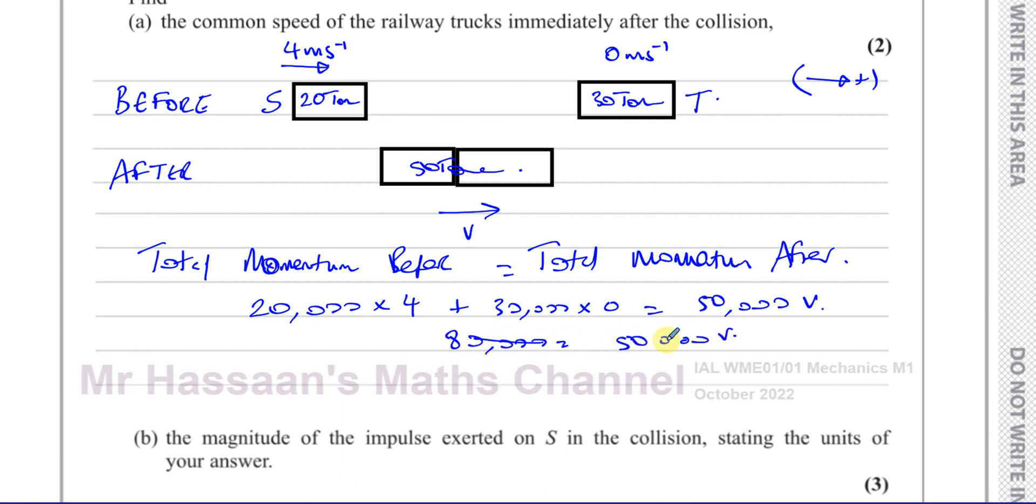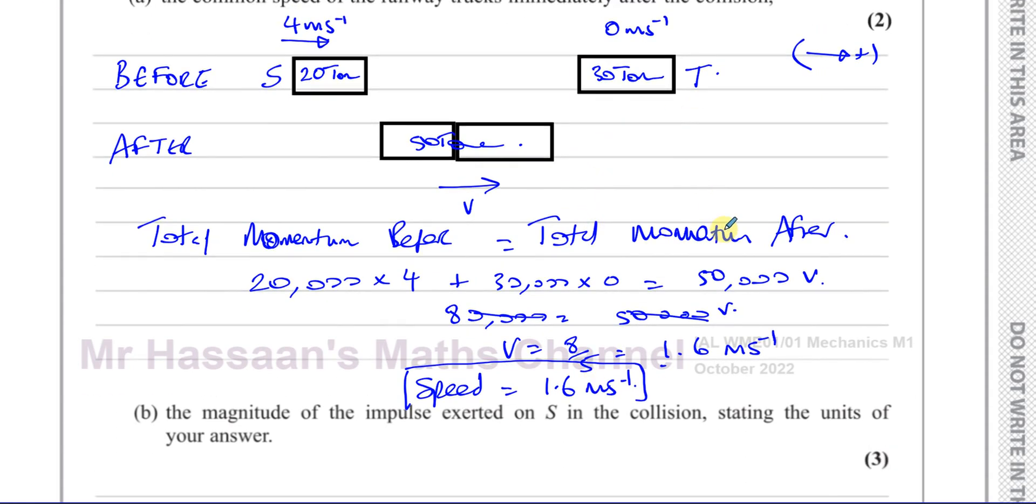This is going to become 0. So you have 80,000 is equal to 50,000 V. We can cancel out the 1,000. So you can divide by 10,000. So you'll end up with V is equal to 8 over 5, which is 1.6 meters per second. So that's the speed. They don't care about the direction, just the speed, is 1.6 meters per second after the collision. So there's the answer to part A of this question, the common speed of the railroad trucks immediately after the collision.